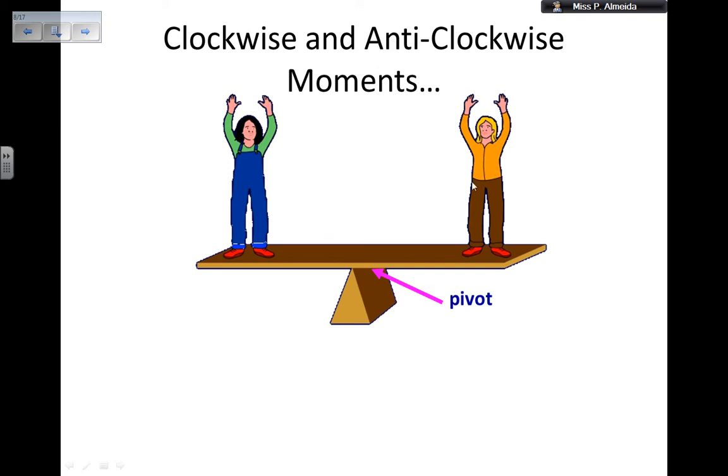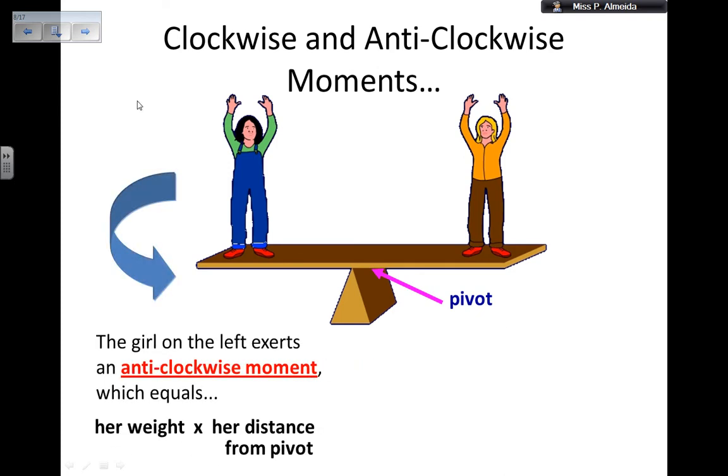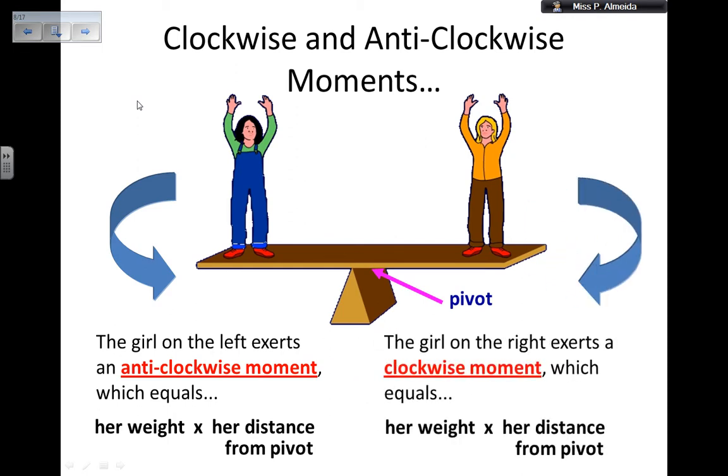This girl, the blonde one, is going to apply a clockwise moment that goes in the same direction as the pointers on the clock, and this one is going into anticlockwise motion. So they will be clockwise and anticlockwise moments, and again the formula is exactly the same. You make the force times the distance from the pivot, and the same is for if you have a clockwise or anticlockwise moment.